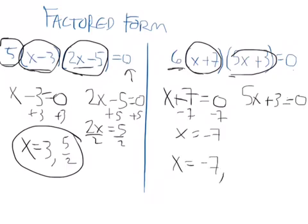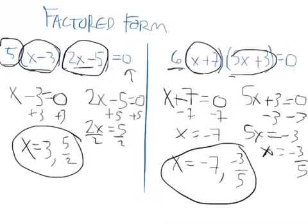Or on this one, again, I'm working to get x all alone. So I'm going to subtract 3, divide by 5. Subtract 3 from both sides. Divide by 5. Sorry. X equals negative 3 fifths. And there you go.